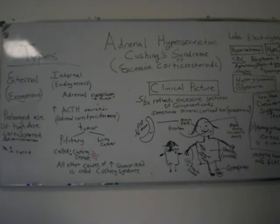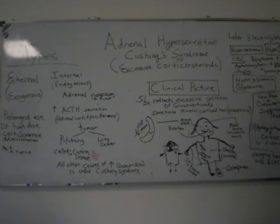There are some hypos in this. Hypokalemia — low potassium, less than 3.5. Hypocalcemia — lower than 8.5. These are very important electrolytes. You don't want to be low on potassium — it could cause cardiac dysrhythmia, which is very serious.